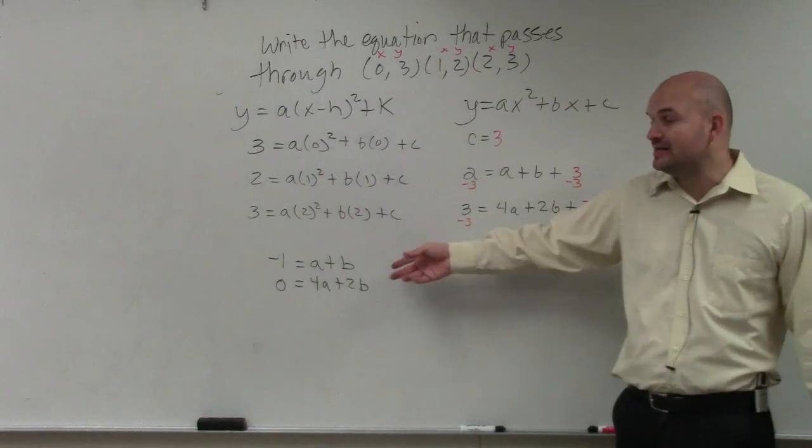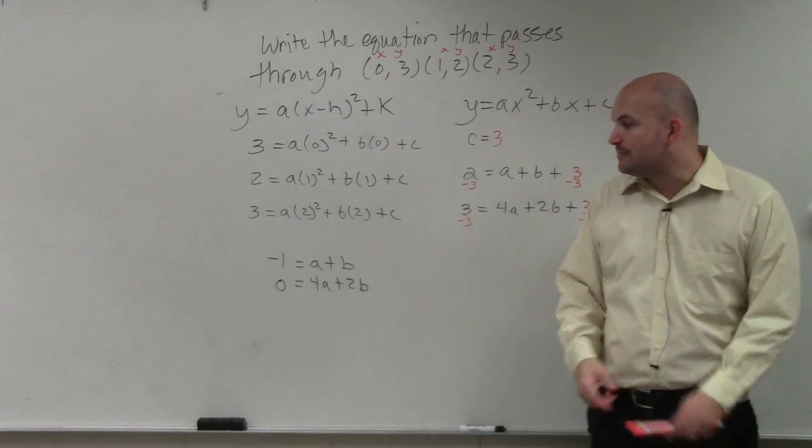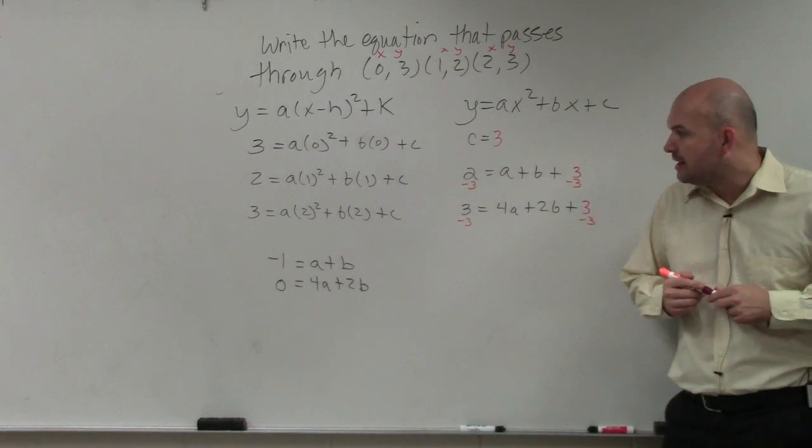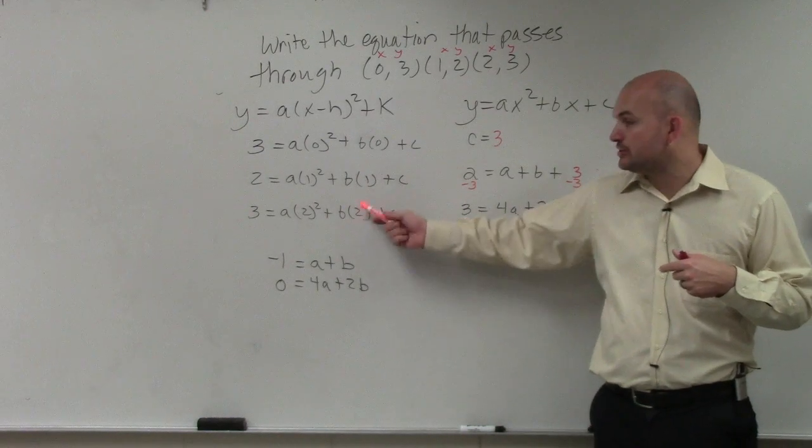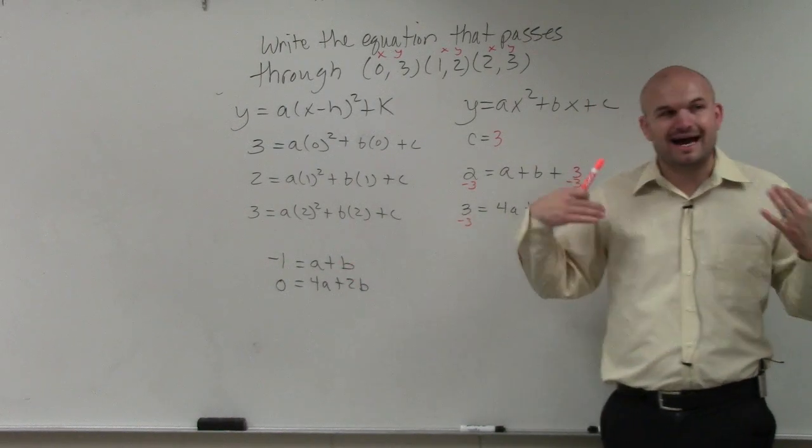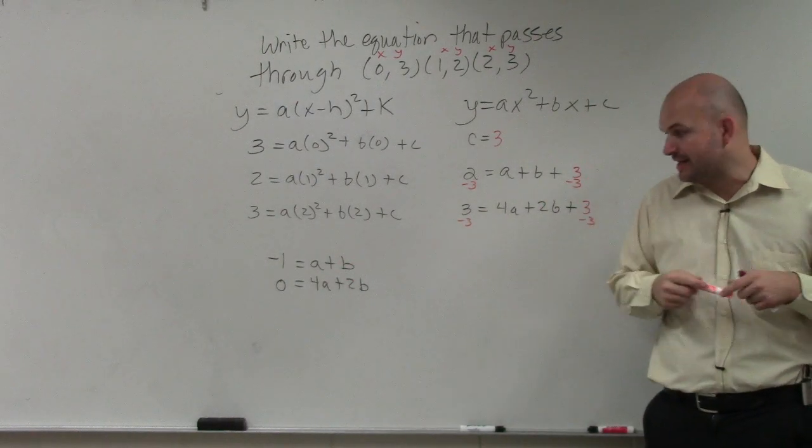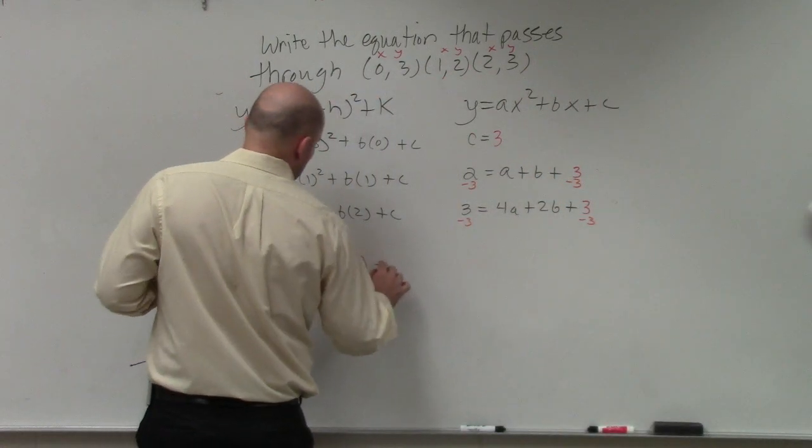So remember, you could either solve for a or b and plug it into the other equation. However, in this example, I would like to use elimination. My preference would be to eliminate the b. Remember, when you're doing elimination, you want to get the variable having the same coefficient. I like to always do one positive, one negative. So therefore, I'm going to multiply the top equation by a negative 2.